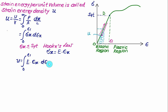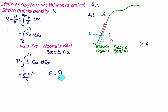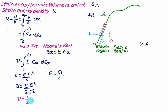Taking E outside the integral gives E times εₓ²/2, evaluated at ε₁, so u = E·ε₁²/2. Replacing ε₁ = σ₁/E, we get E·(σ₁/E)²/2 = σ₁²/(2E). The final expression for strain energy density in terms of stress is u = σ₁²/(2E).